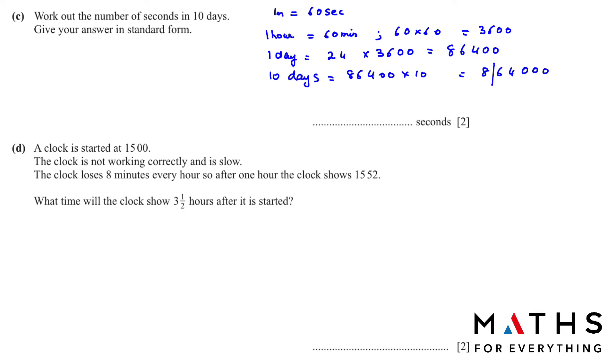We have to write this in standard form. When we write in standard form the first number we leave it and then we put decimal. Then we count the numbers here: 1, 2, 3, 4, 5. So we will write it as 8.64 times 10 to the power of 5.